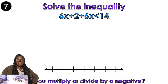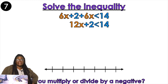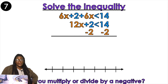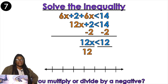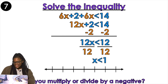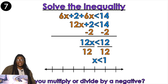Solve the inequality: 6x plus 2 plus 6x is less than 14. No distribution here. Did you say combine like terms? You would be correct — 6x and 6x makes 12x, plus 2 is less than 14. Now look at that — it's just a regular two-step equation. 12x is less than 12. Divide by 12 — x is less than 1. You did not multiply or divide by a negative, so there's no flipping of the symbol. Open or closed circle, and left or right.